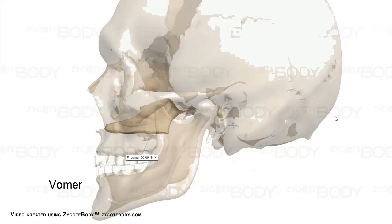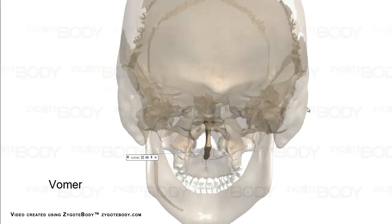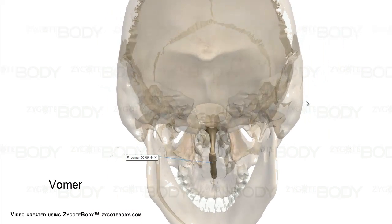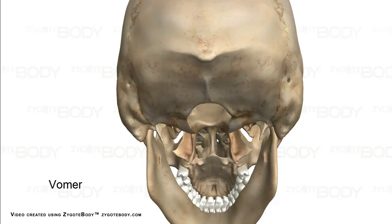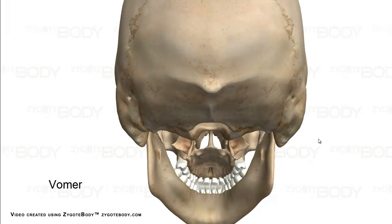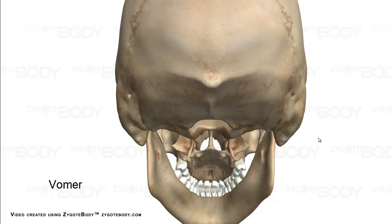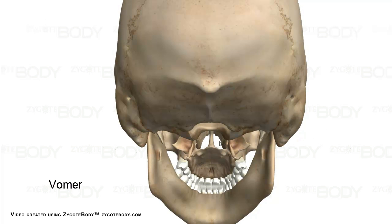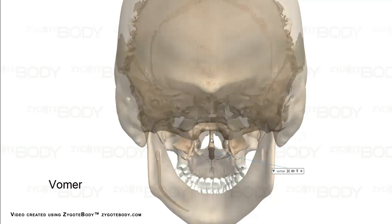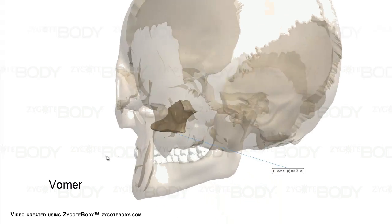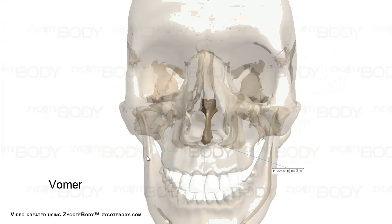The vomer is kind of a plow shape or boot shape structure. If we take the skull and spin it around, looking at the skull from behind and looking out through the nose — this entire structure is vomer.